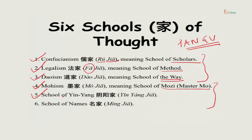The sixth and last school is the School of Names, or Ming Chia. Some scholars consider this a very important school — for example, Joseph Needham regards it as quite significant.